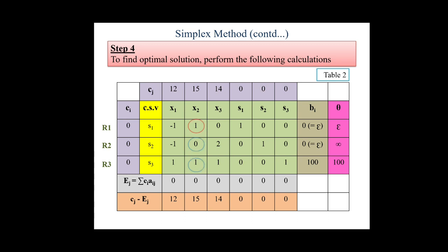Next, to create the iteration, we have to keep some points in mind. Our key element which is highlighted in red, we have to make it 1. So here it is already 1. The rest elements in the key column should be 0. So the R2 row element is 0, but we have to make the R3 row element 0. To make it 0, we can subtract R1 from R3 row, so that our R3 row element becomes 0. So performing all these calculations...